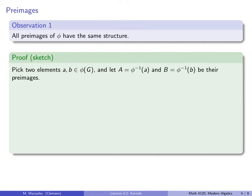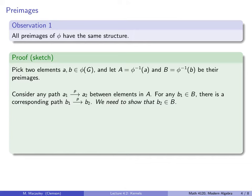Let's pick two elements A and B in the image, and let capital A and capital B be the respective preimages. Consider any path between elements in A: let A1 and A2 be two elements, and let P be the element that corresponds to the path from A1 to A2. Now for any B1 in B, there's a corresponding path starting at B1 and following path P, that gets to some element B2. We need to show that B2 is indeed in B.